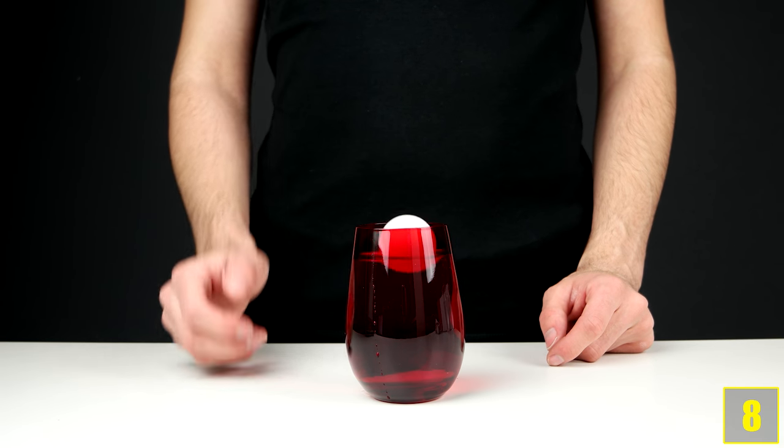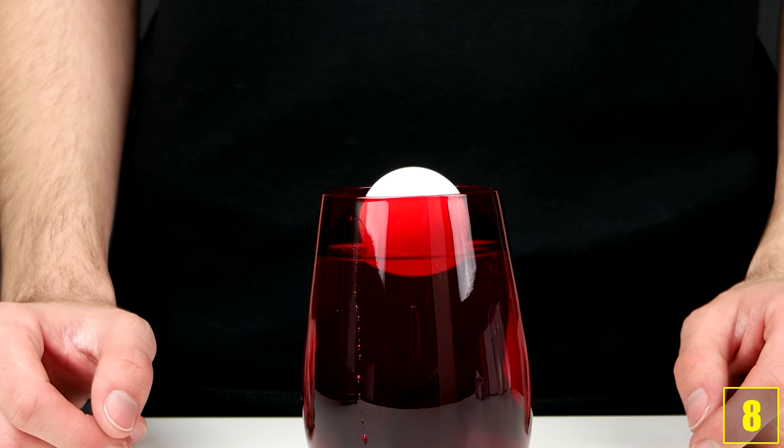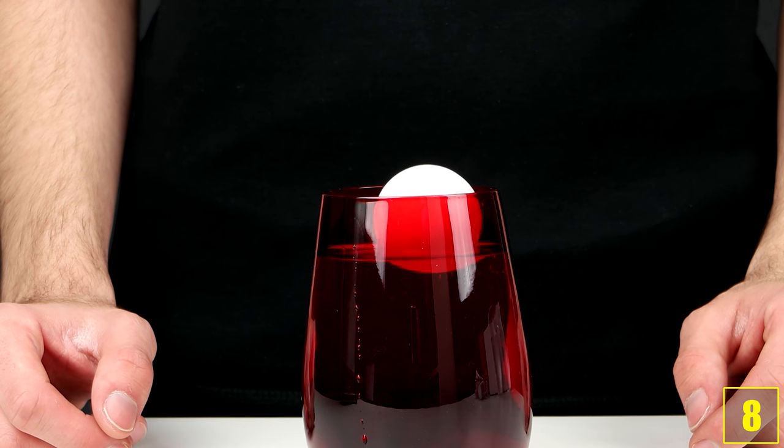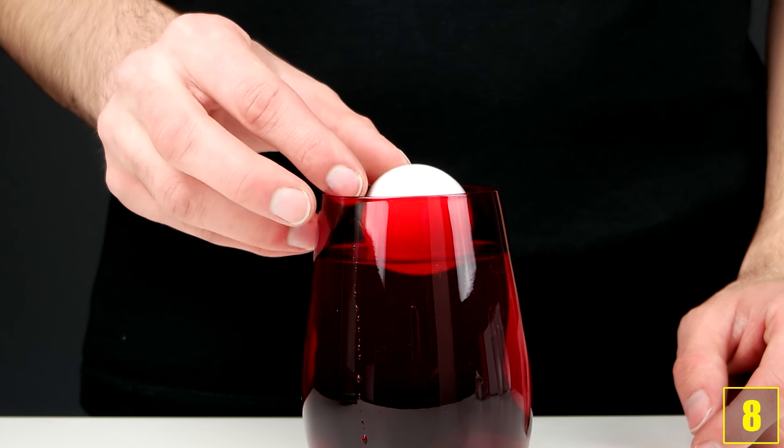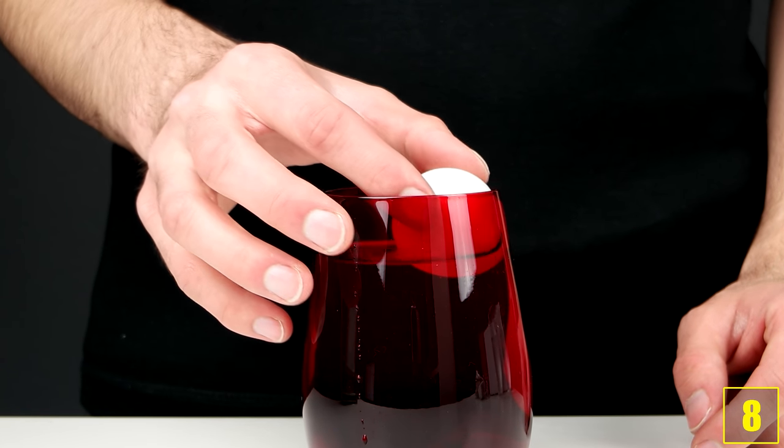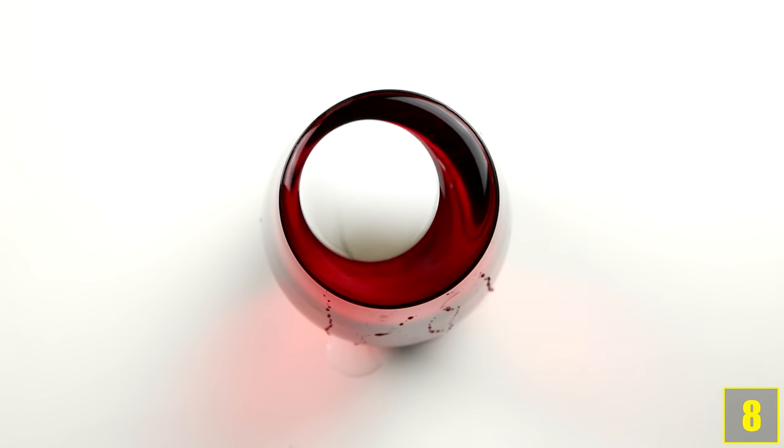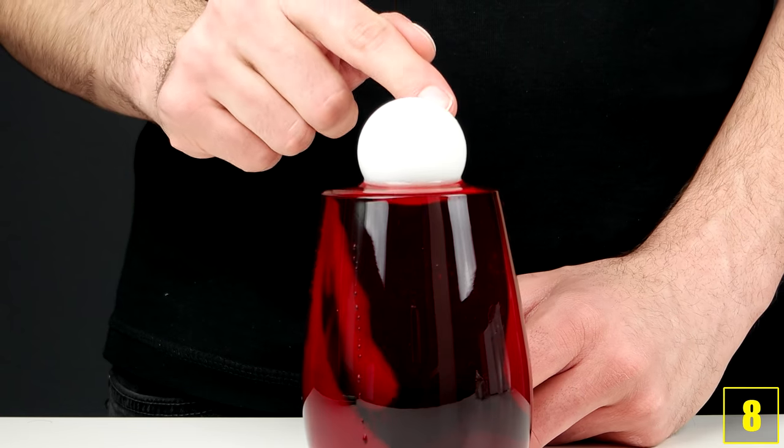Number 8. A party trick. If you place a table tennis ball in a glass full of water, it'll always move to the edge. Your friends should try and place the table tennis ball so that it floats in the middle of the glass. The solution is, if you fill the glass as full as possible, the ball will float to the middle, thanks to the surface tension of the water.